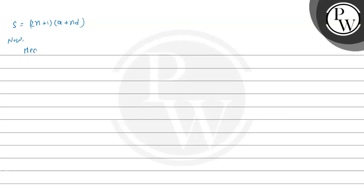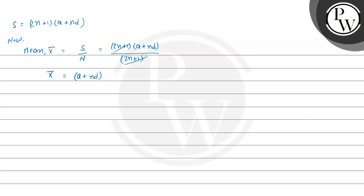Now the mean is x̄ = total sum divided by number of terms. The total sum is (2N+1) × (A+ND), and the total number of terms is 2N+1. So the (2N+1) terms cancel, and we get mean x̄ = A + ND. So we have found the mean.